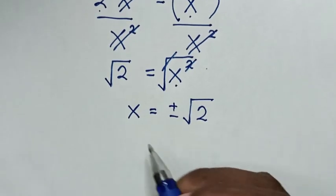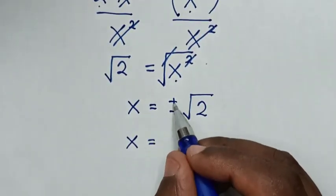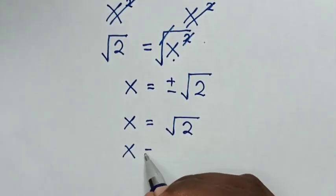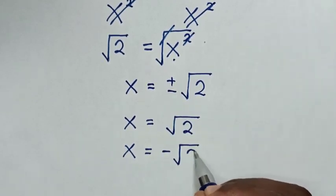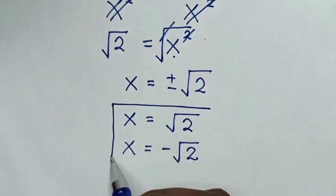Therefore, we have two solutions for the values of x. When it is positive, x = √2. And the other value of x, when it is negative, will be x = -√2. So these are the answers for the values of x.